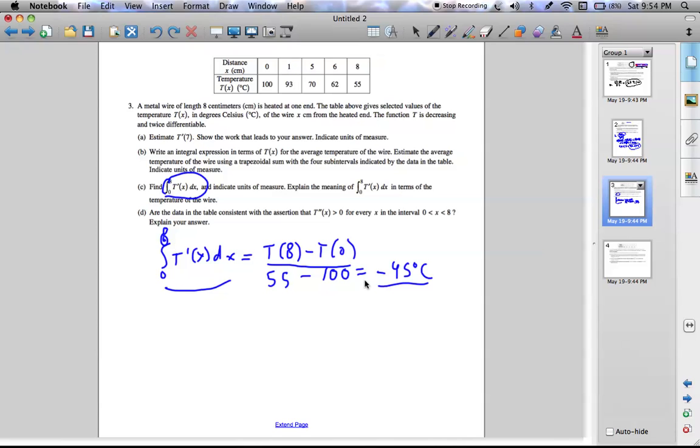And that gives you your displacement temperature. So the temperature has dropped from one end of the wire, over here at 100 degrees, very hot, to the end of the wire at 8 centimeters from the end, which is 55 degrees, which is not as hot.